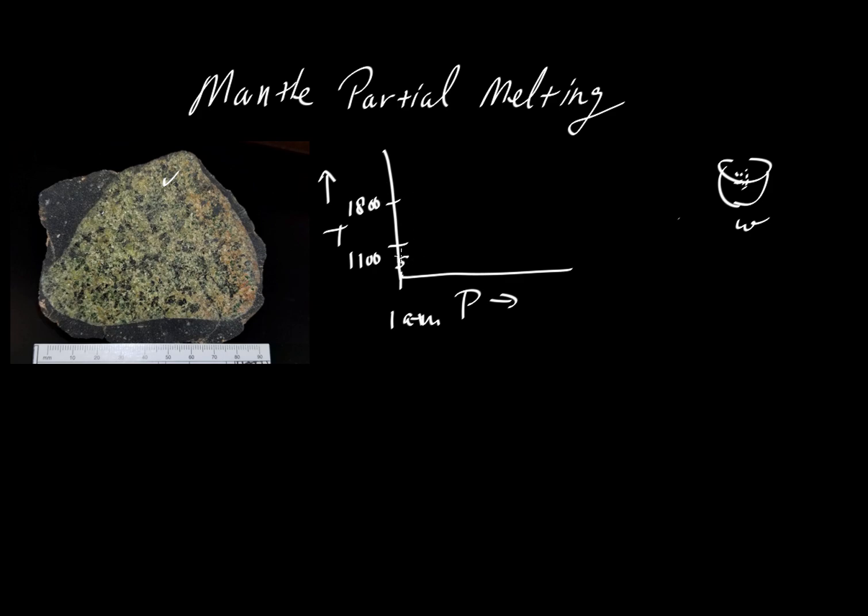So below 1,100, it would be solid. Above 1,800, it would be liquid. And in between, it would be a mixture of solid plus liquid.